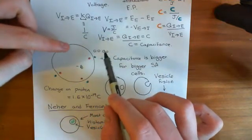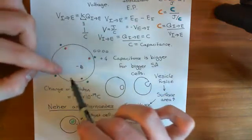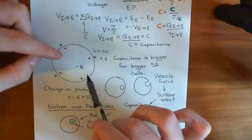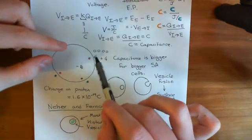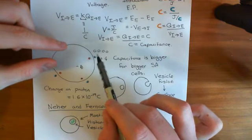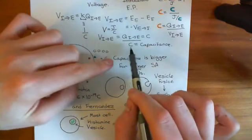And we've seen that if you have a greater surface area, if the surface area of the cell membrane is larger, then that's going to mean that from moving a certain amount of charge, the voltage you get for that is going to be lower.